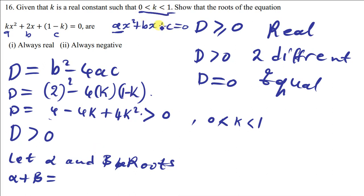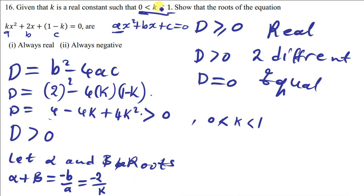We know that alpha plus beta is found by calculating negative b over a. Our b in this expression is 2 and our a is k, so alpha plus beta equals negative 2 over k. If we put any value of k ranging from zero to one where there is k, we are going to get a negative answer — try 0.1 or 0.5. The answer will still be negative, meaning the sum of these two roots always gives a negative answer, hence proving that the roots of this equation are always negative.